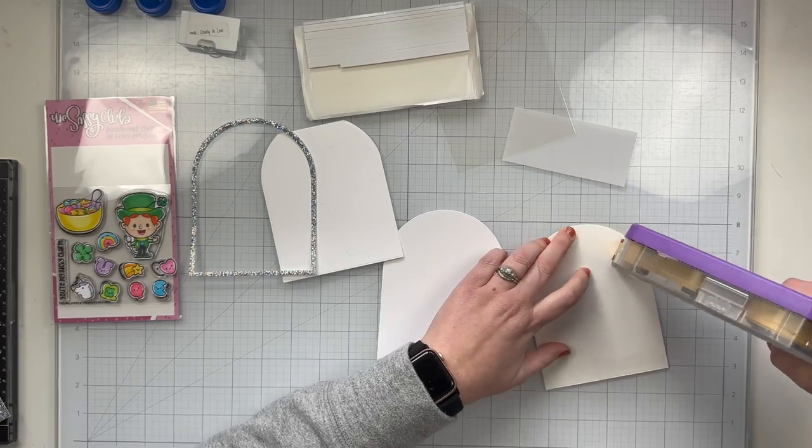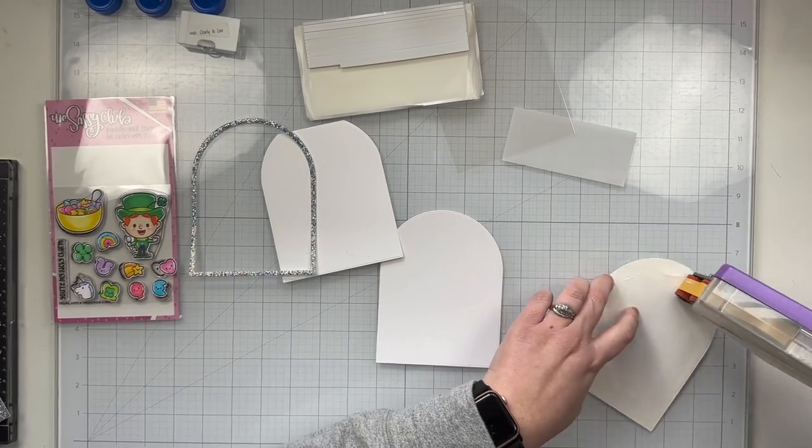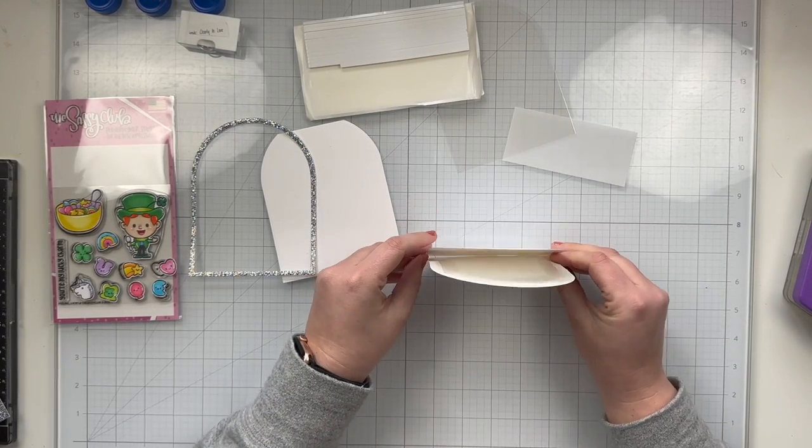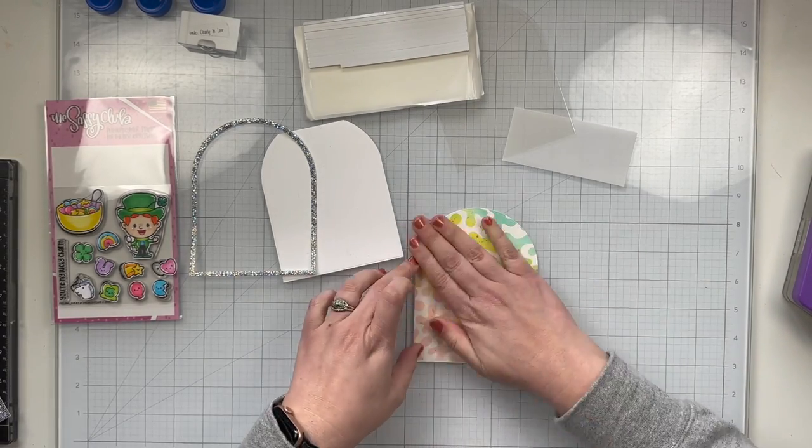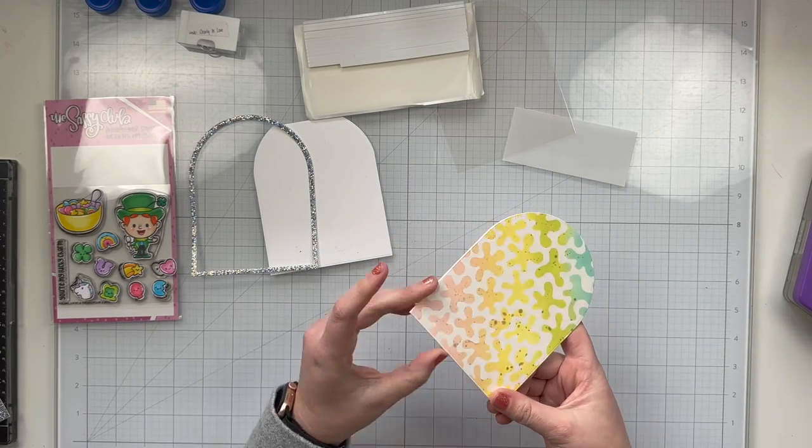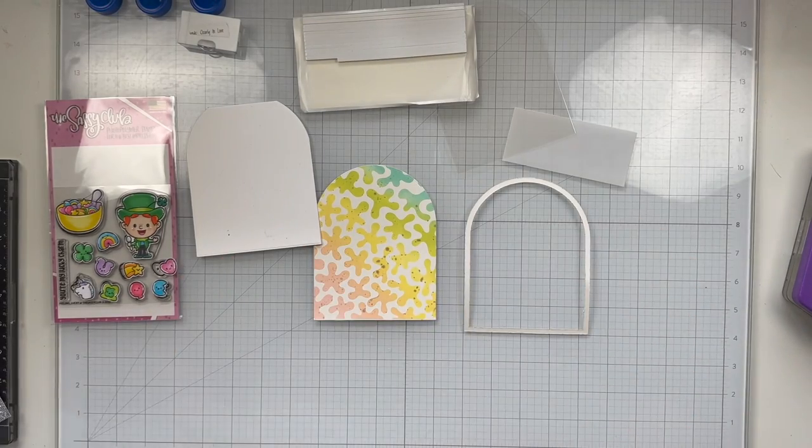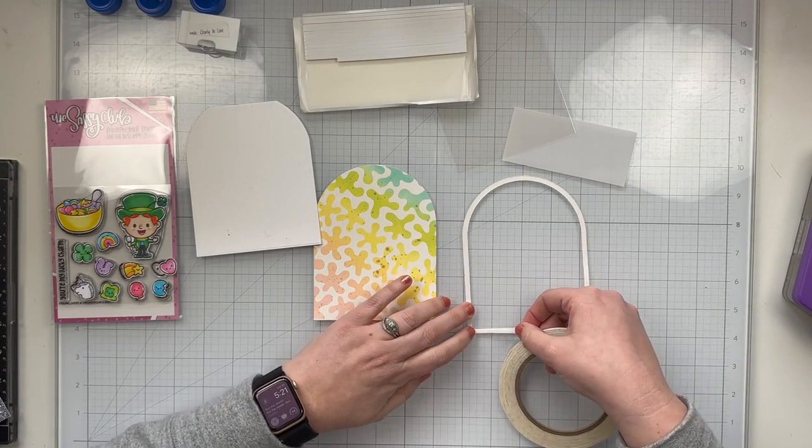So I'm going to glue my stenciled background. Again, I will have that linked here in the upper right hand corner as well as in my description box if you want to see how my stencil background came together but I'm gluing it to a piece of thicker sturdier white cardstock since I made this on some mixed media paper and it's a little bit thinner.